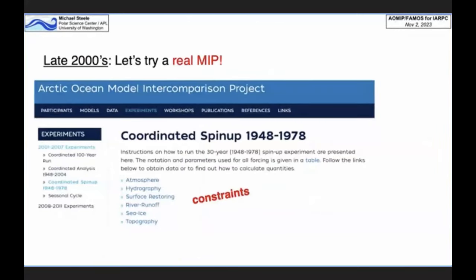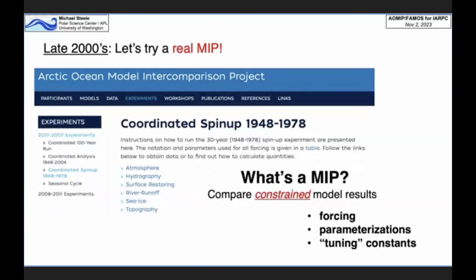After a number of years in the late 2000s, we realized our project was named the Arctic Ocean Model Intercomparison Project, so maybe we should do a MIP. We outlined a coordinated activity where everyone was supposed to use the same atmospheric forcing on their ice-ocean models — same surface restoring, river runoff, sea ice albedo, things like that. A MIP is a bunch of modelers running their models in a constrained way where everyone does at least something the same, reducing degrees of freedom and comparing apples to apples: same forcing, same parameterizations, same tuning constants.